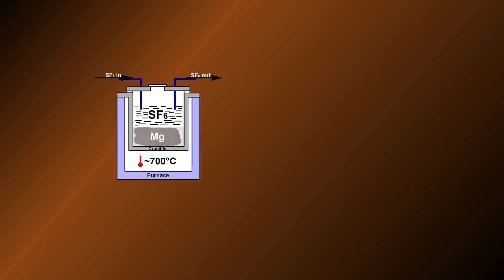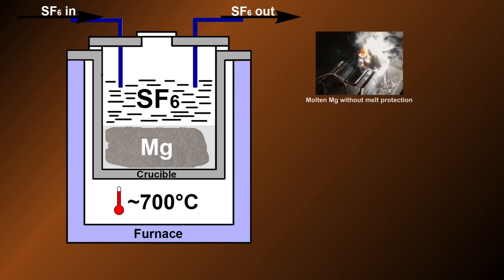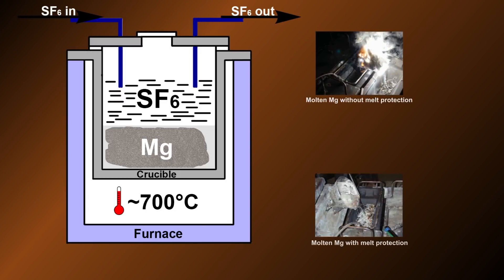Sulfur hexafluoride is often used as a cover gas during magnesium smelting to prevent the molten magnesium from reacting with oxygen. But if your magnesium ignites, this cover will turn into weakness.